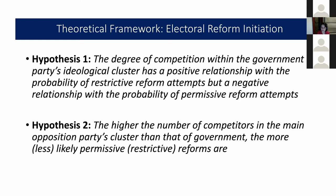To test these hypotheses, I use a novel dataset of electoral reform attempts during the post-war era until 2015 in 32 parliamentary democracies. I define electoral reform as a change in four main components of the electoral system: district magnitude, tier structure, whether there is an upper tier in the electoral formula, the seat allocation formula, and lastly the electoral threshold — the legal threshold that parties must pass in order to gain access to parliament.